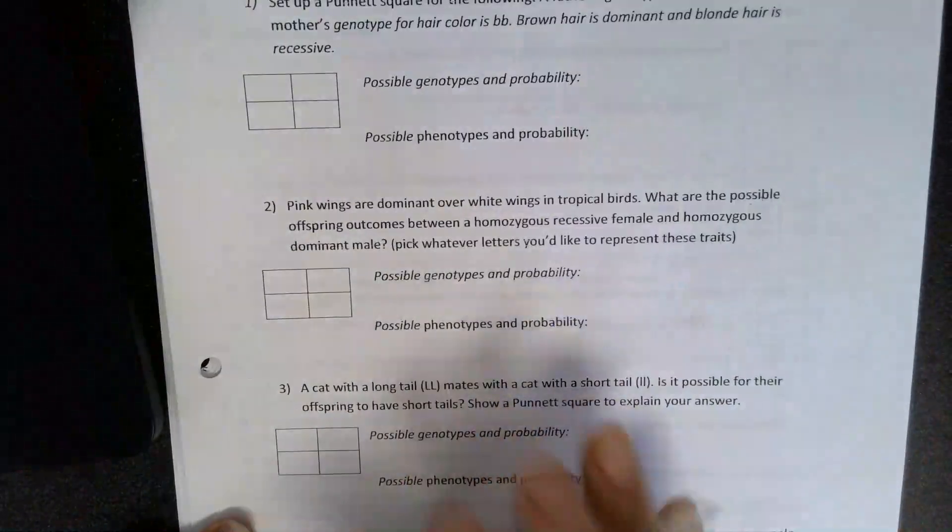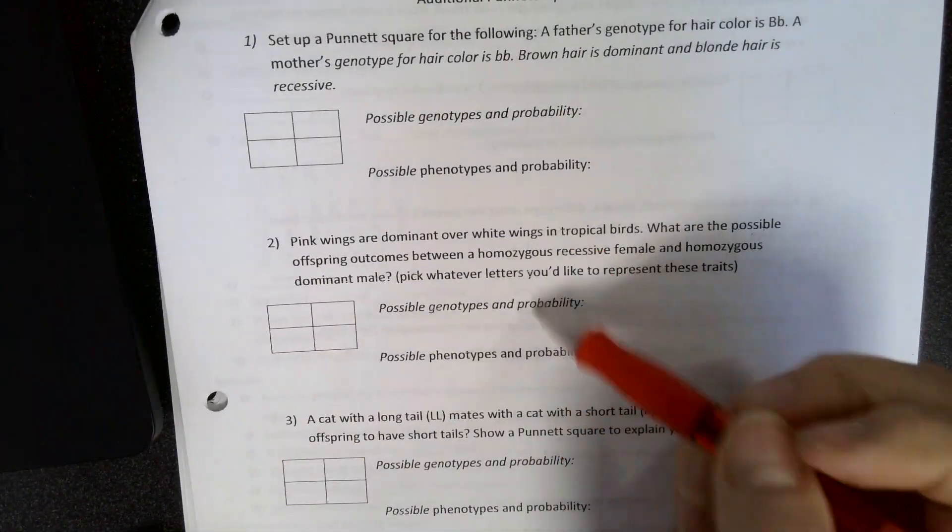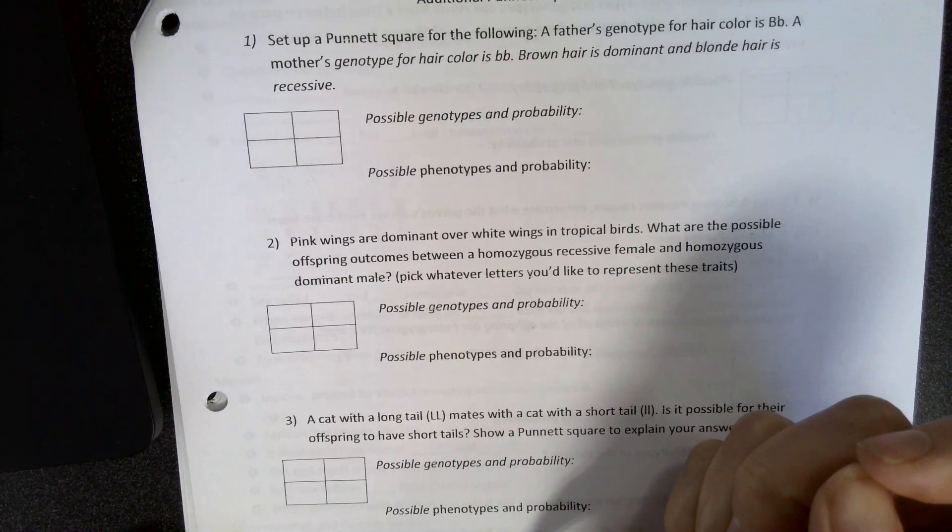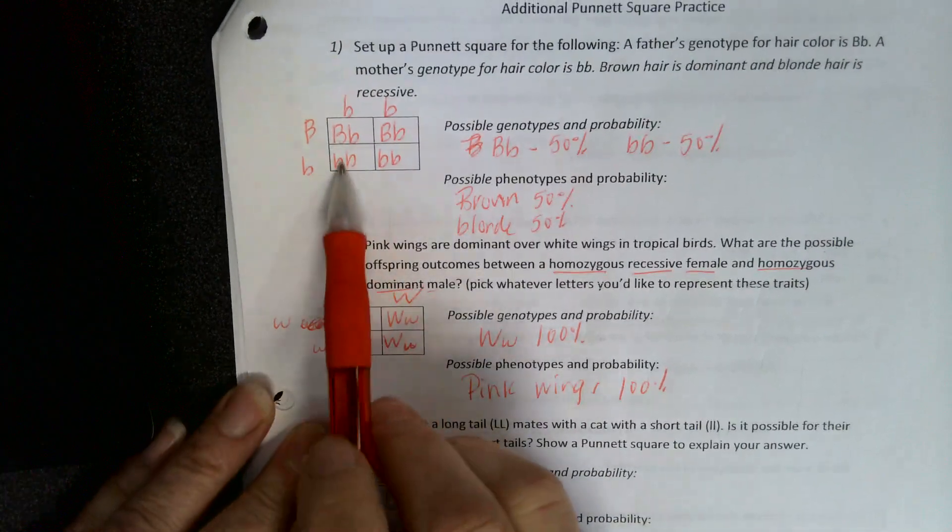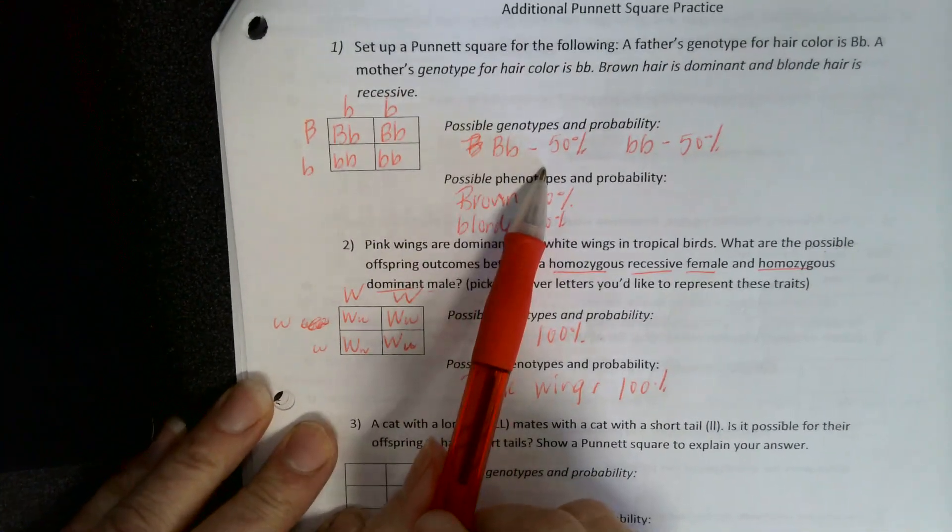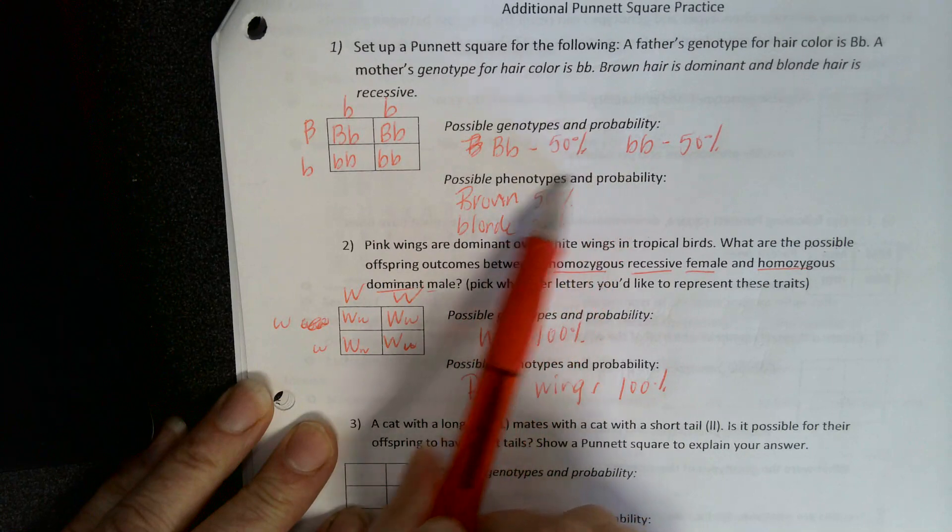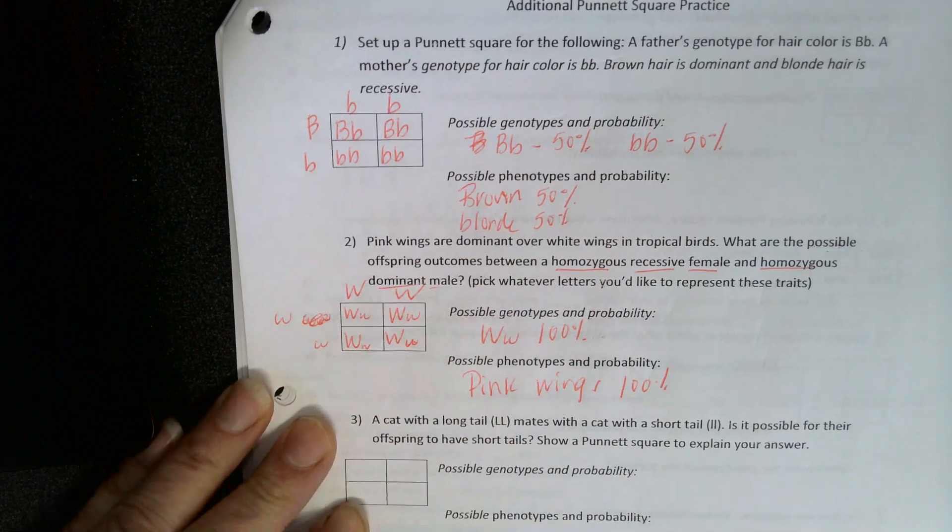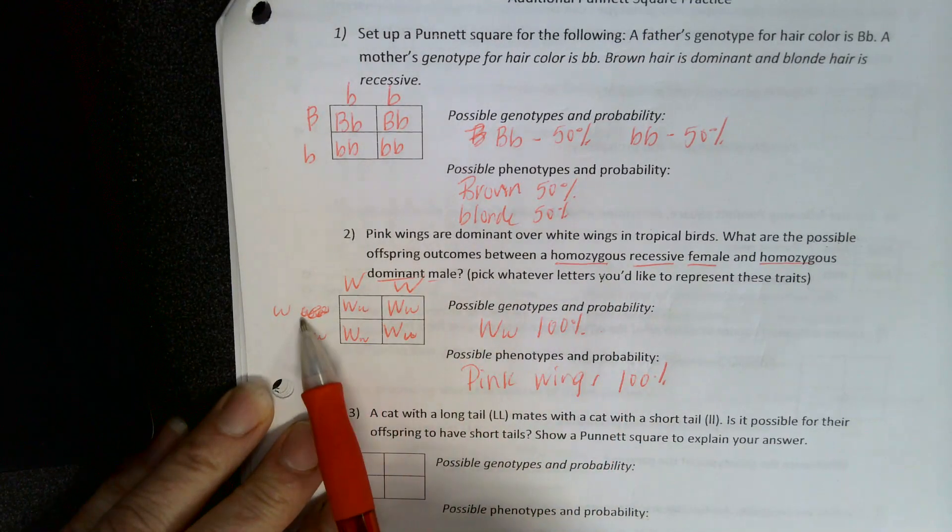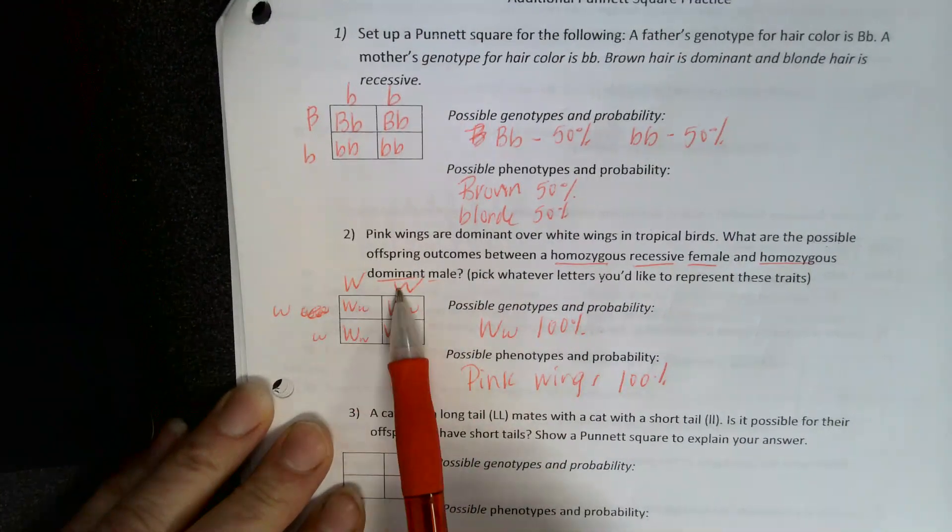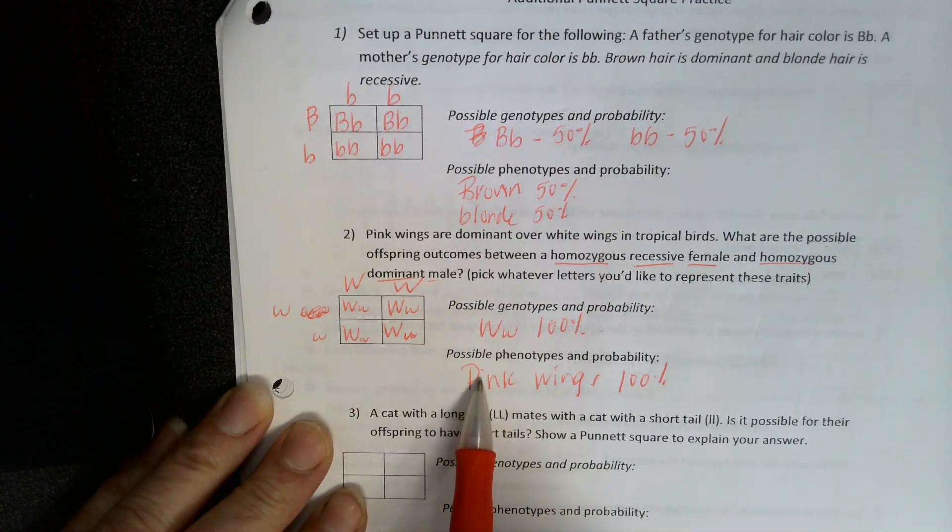Now, in class, we're going to be going over these and working these problems. And so you're going to do that. And then I am going to show you the key. So for the first two problems, this is how I set it up. This is what I'm getting for my genotypes and my probabilities. Brown and blonde, 50-50. Pink wings. I use Ws. You could actually use any letter you wanted because it was wings. Homozygous recessive. That's your little, little. Homozygous dominant. That's your big, big. You're only going to have one outcome.